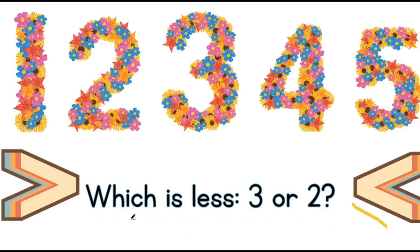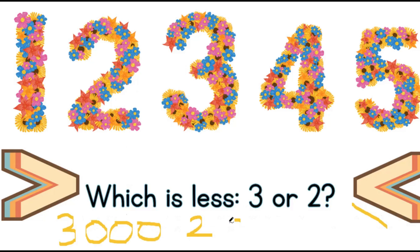Which is less — three or two? Let's work it out by drawing circles. Three: one, two, three. Two: one, two. Two has less circles. That means our answer is the number two. Two is less than three.